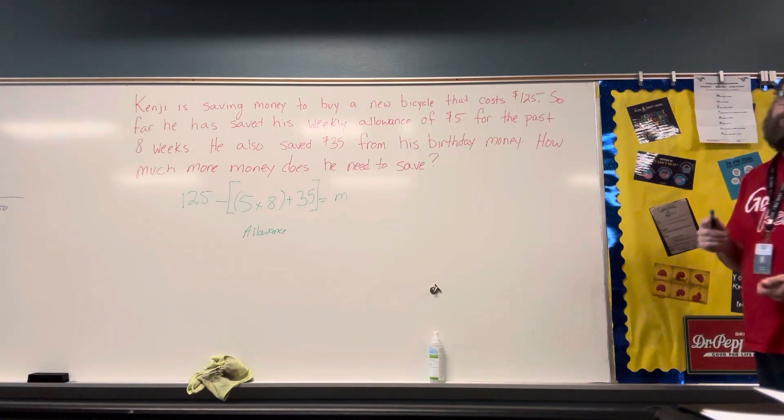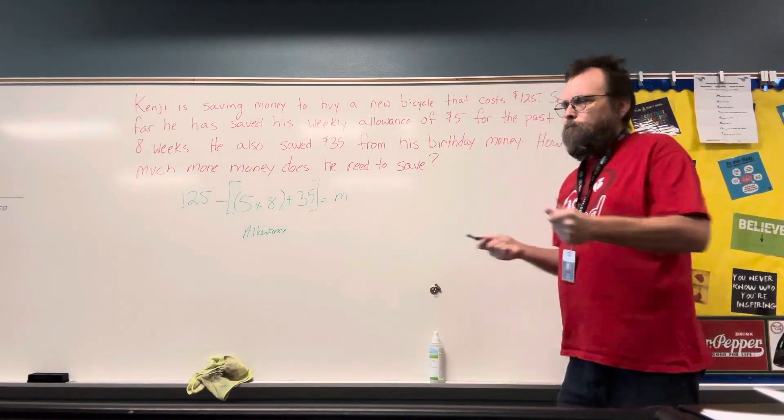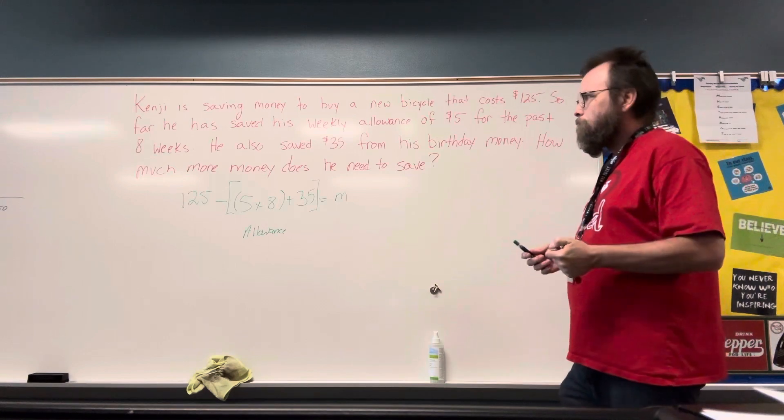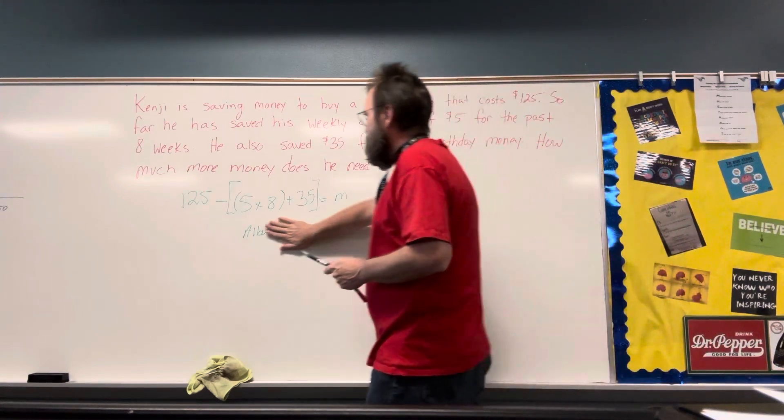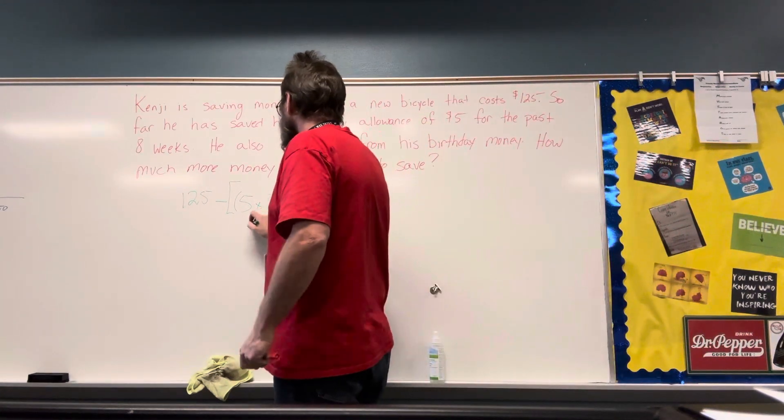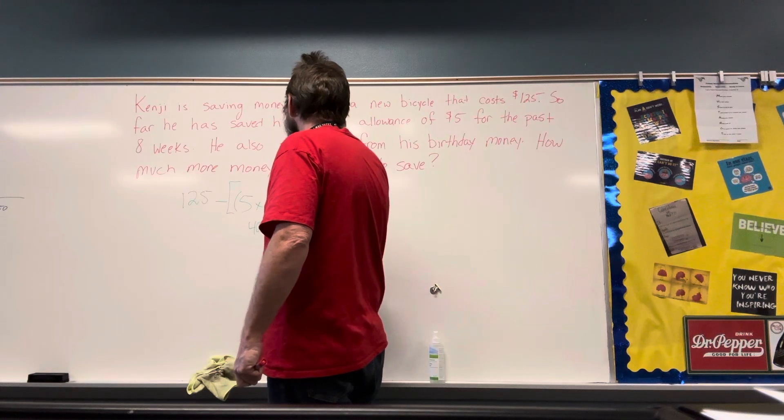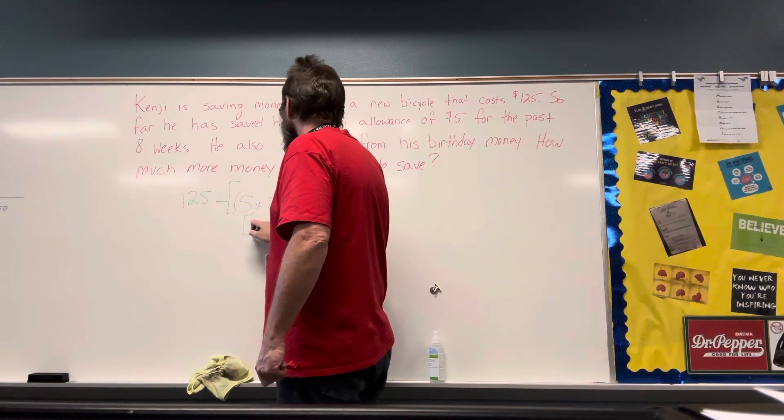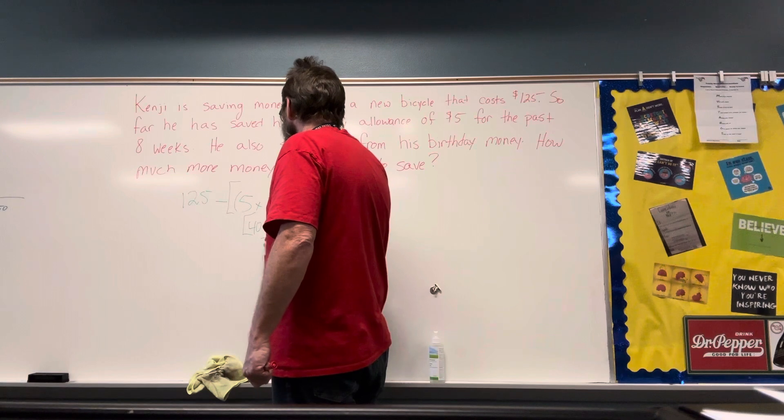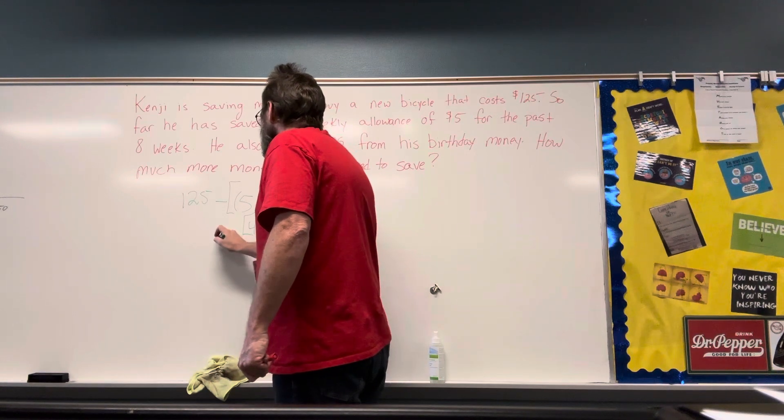Connor? The 5 times 8 would equal 40, and plus 35 would equal 70. So it would be subtracting 75 minus 125, which would equal 50.